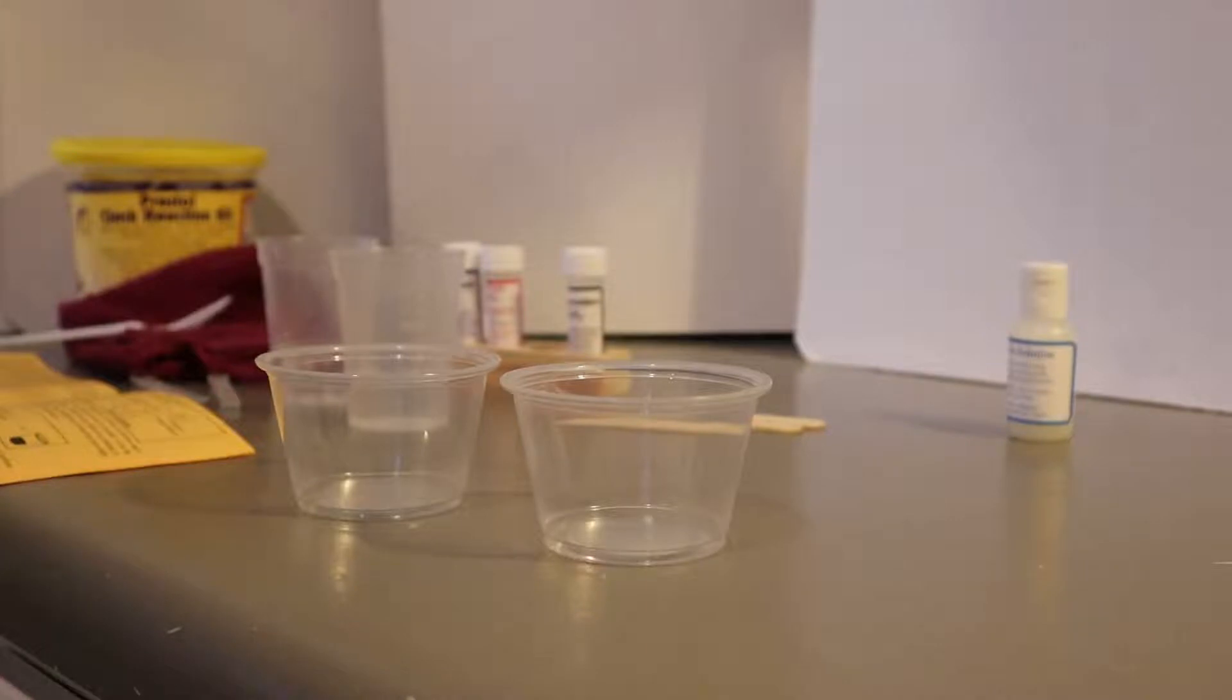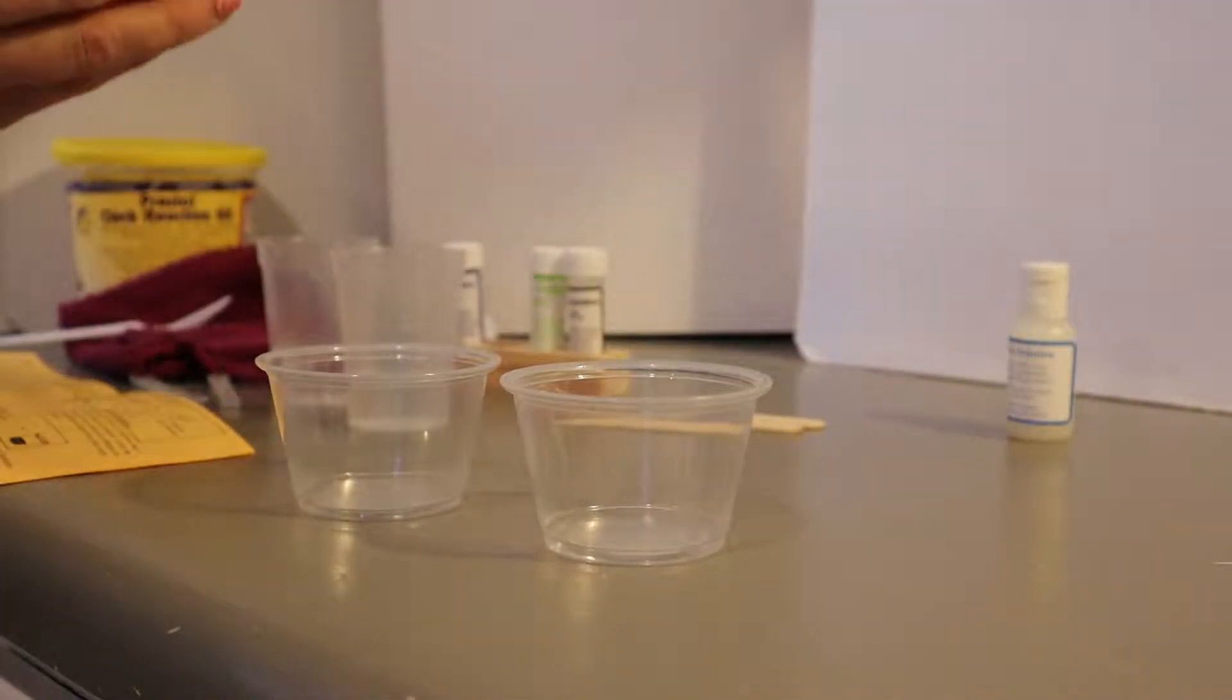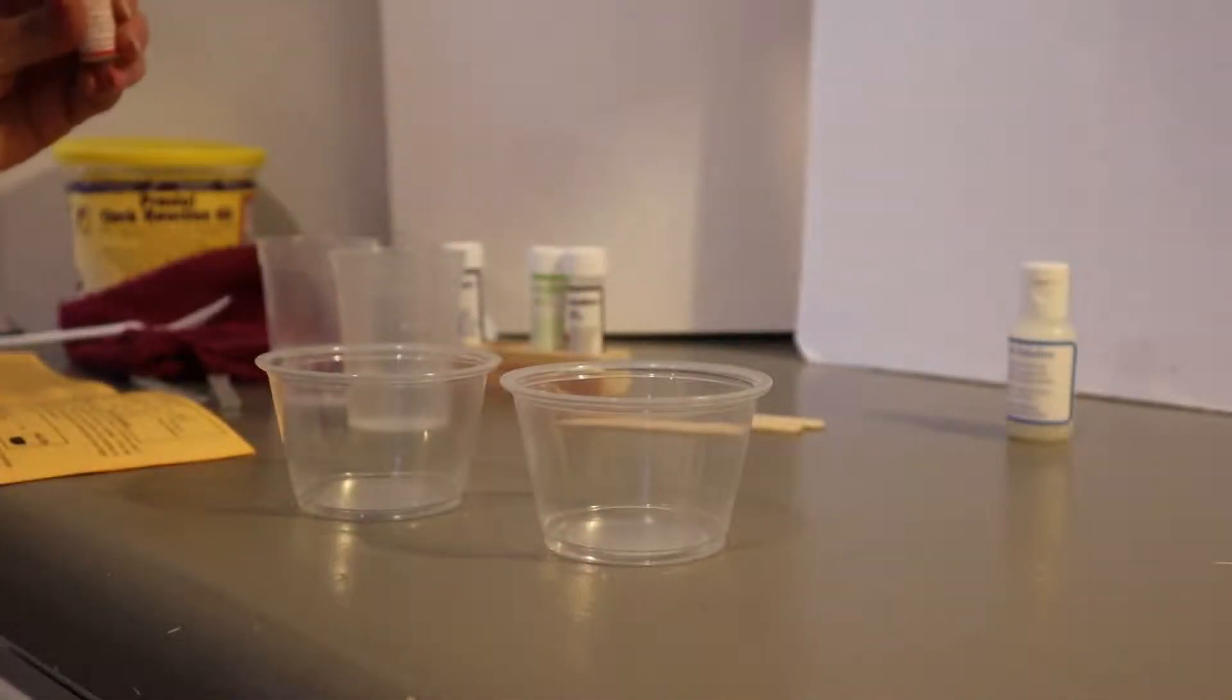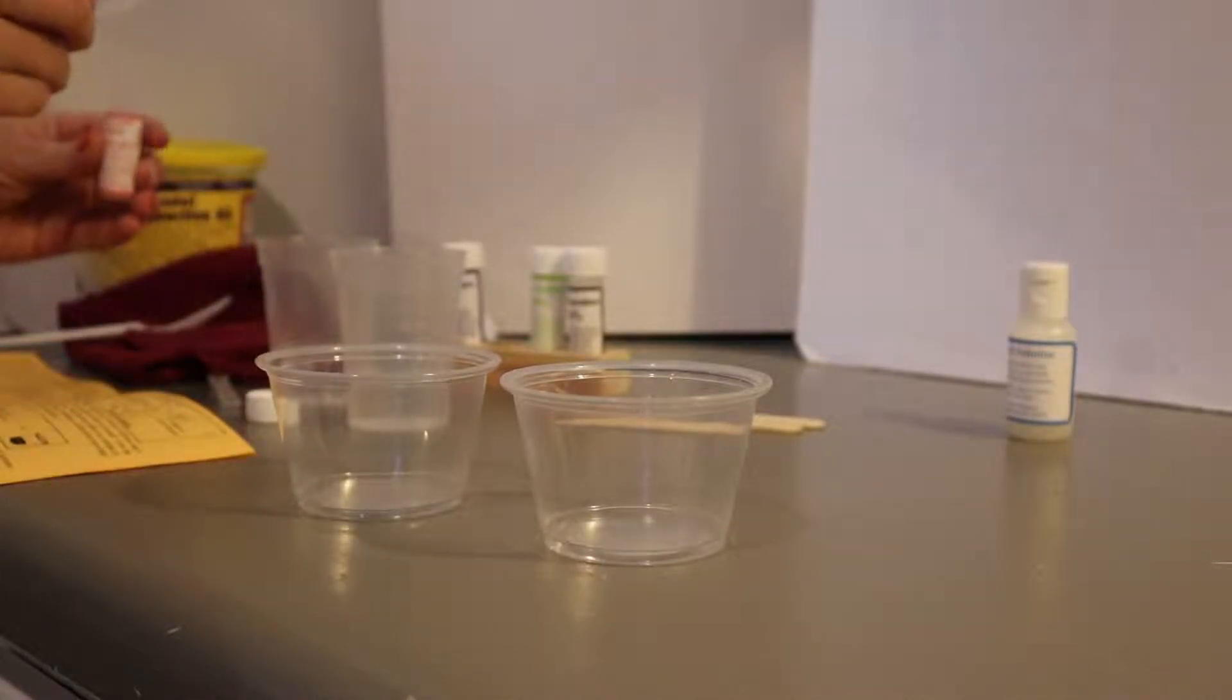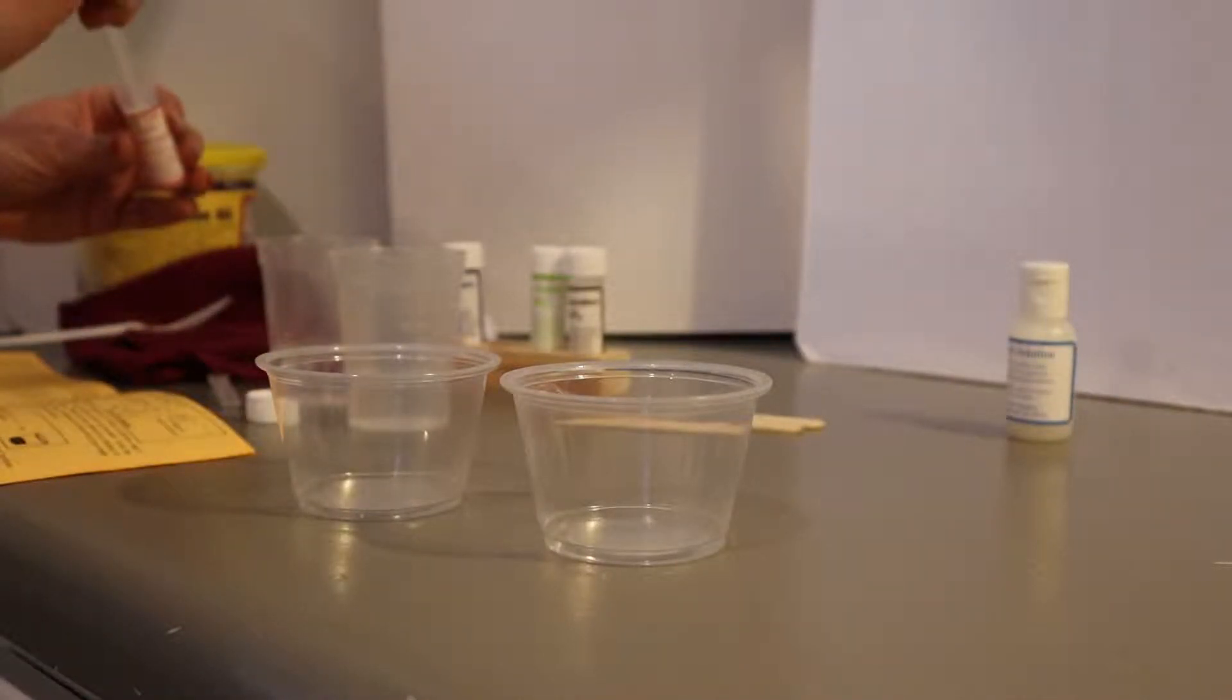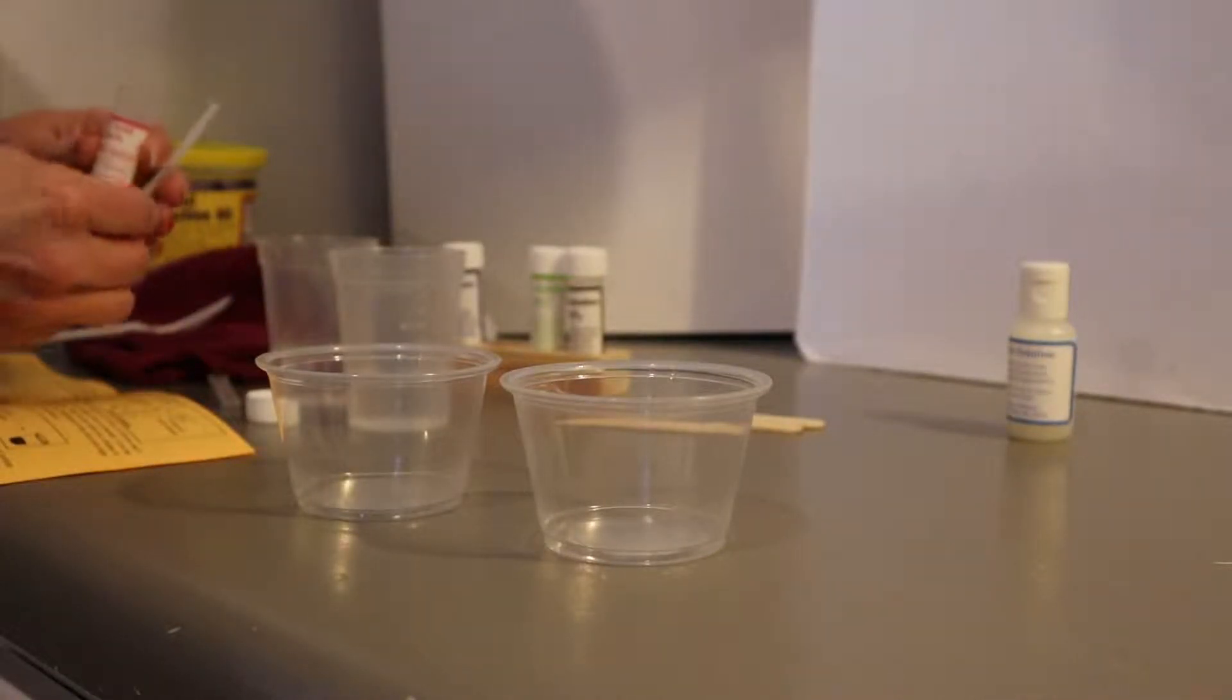And now they want me to do two small scoops of citric acid. So two small scoops of citric acid. Was this A and this is B? No. That's A. That's B. Did I just put it into the wrong one?